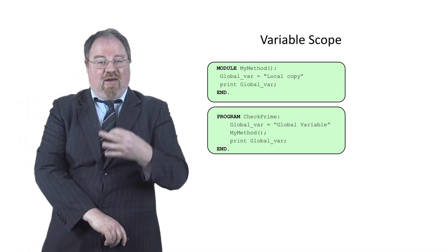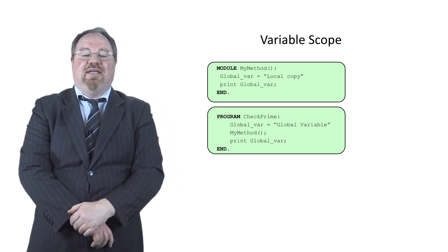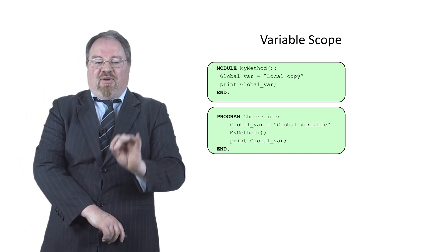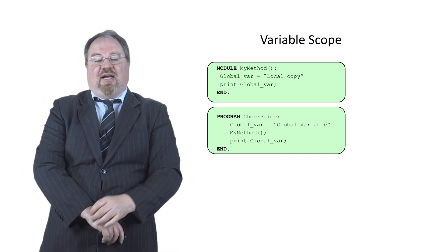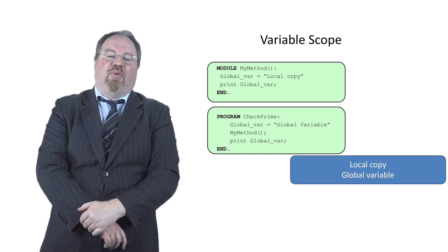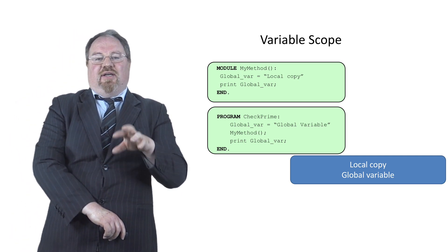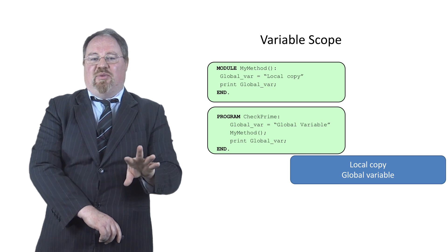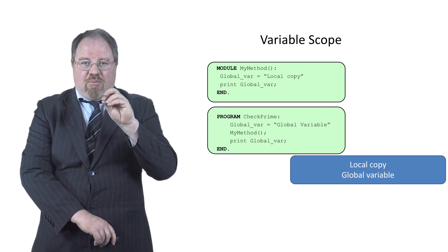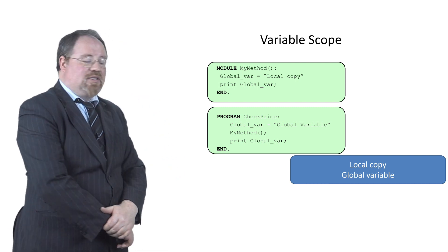Now if I declare a local copy of the variable global variable in my method and I call the program again, the global value is global variable. I call my method, it'll print out local copy first, and then it'll print out the global one, global copy. So inside the method, if there's a variable who has the same name as a global variable, the local copy is treated as primary inside the method, and outside the method, the global variable is treated as primary.